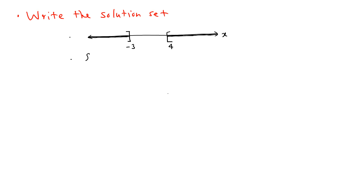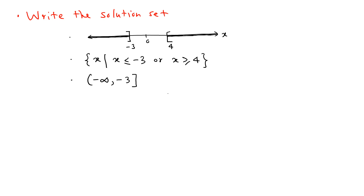The second way is set-builder notation: the set of all x such that x is less than or equal to negative 3, or x is greater than or equal to 4. The third way is interval notation: negative infinity to negative 3, closed bracket, union with 4 to positive infinity, closed bracket. That is the interval notation version.